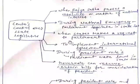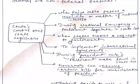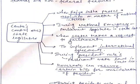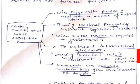Regarding the center's control over state legislation: when Rajya Sabha passes a resolution on a matter of national interest, Parliament can legislate on state list subjects. Also during national emergency, when states make a request to Parliament, to implement international agreements, and during President's Rule, Parliament can make laws on state list subjects. The Governor can also reserve certain bills for the consideration of the President.